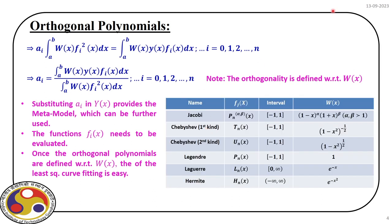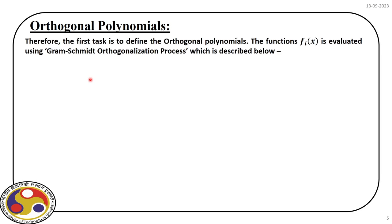There are different orthogonal polynomials depending upon the interval and the domain over which we integrate. Based on the domain A to B and the weight function, we have different orthogonal polynomials — for example, Jacobi, Chebyshev, Legendre, Laguerre, Hermite. As we progress, we will derive some of these polynomials, see how their mathematical forms are developed, and understand how they help us develop the metamodel more efficiently. The first task when developing a metamodel based on orthogonal polynomials is the evaluation of the orthogonal polynomial itself.